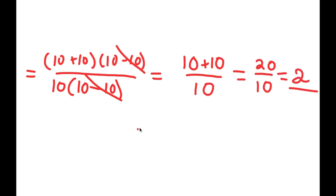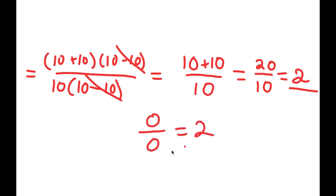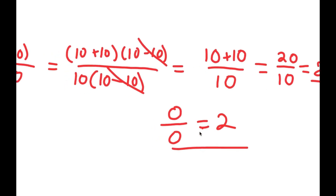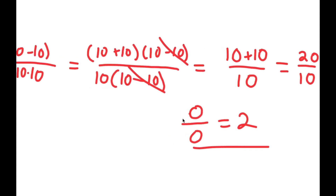10 plus 10 is 20, so I have 20 over 10, and 20 divided by 10 is 2. So I just proved that 0 over 0 is equal to 2.